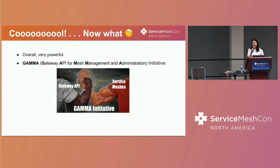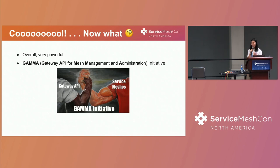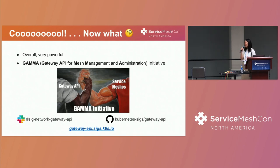Another exciting thing is the GAMMA initiative. You can probably see that Istio resources and Gateway API resources are quite similar, and you might think 'oh, I have to learn another thing.' The GAMMA initiative is here to create a more holistic journey between what the Gateway API means for service meshes in the world — and since we're at Service Mesh Con, this will probably impact you in the near future. This working stream is investigating that, so get involved.